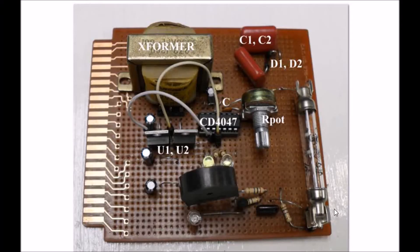Here's a closer look at the board layout. Here's the output transformer and the CD4047 — we'll be using it in the astable mode, that is, it's going to be a square wave oscillator. We have two output MOSFETs, U1 and U2. The frequency of the output is set by this capacitor C and the value of this pot, R pot.